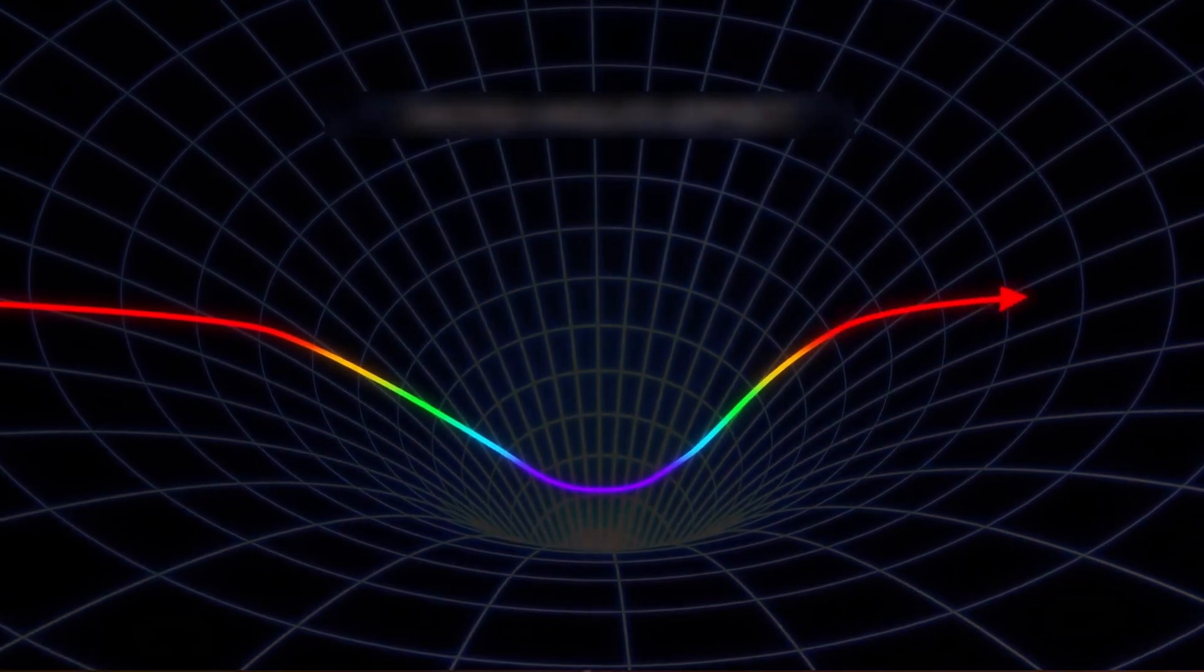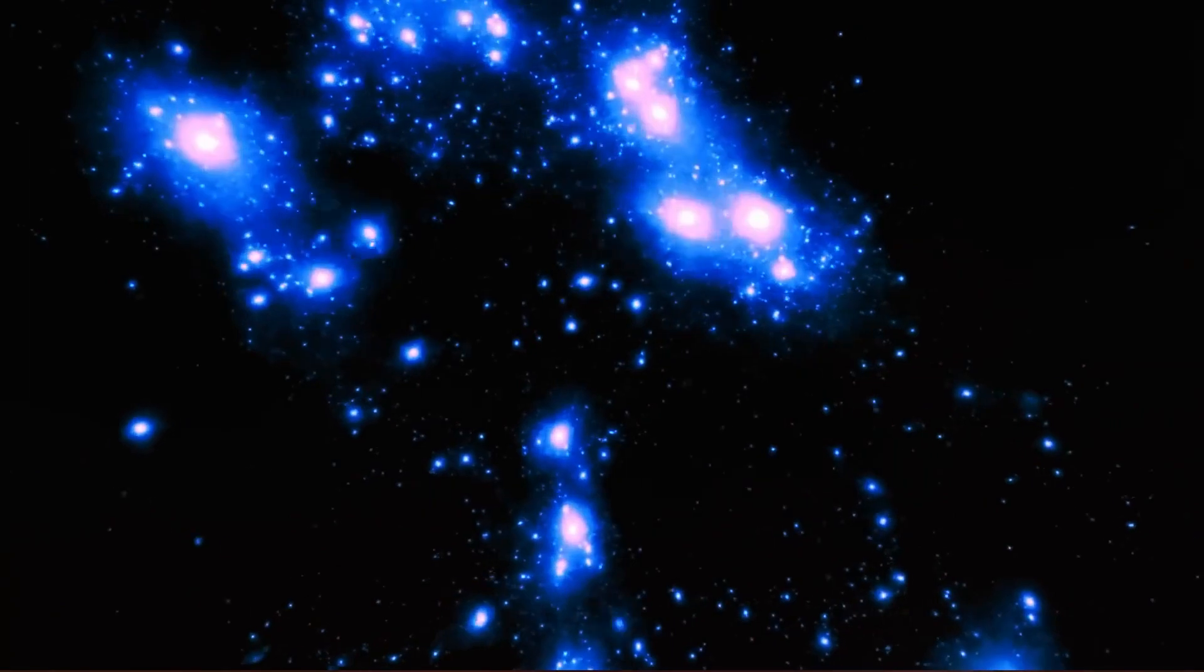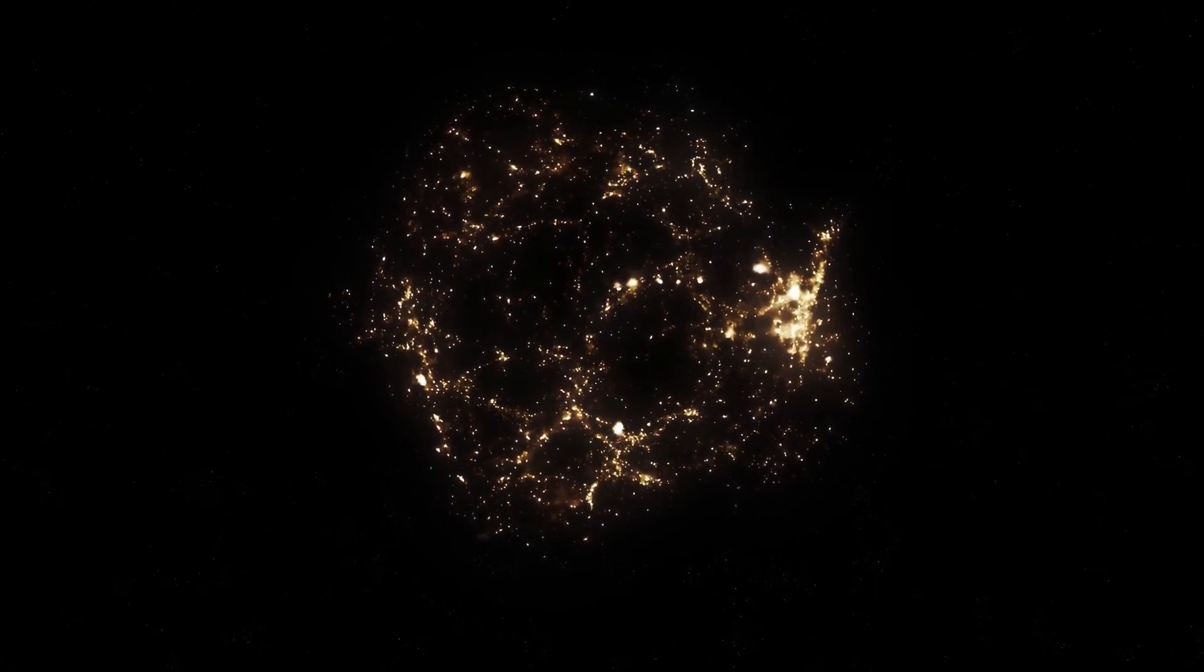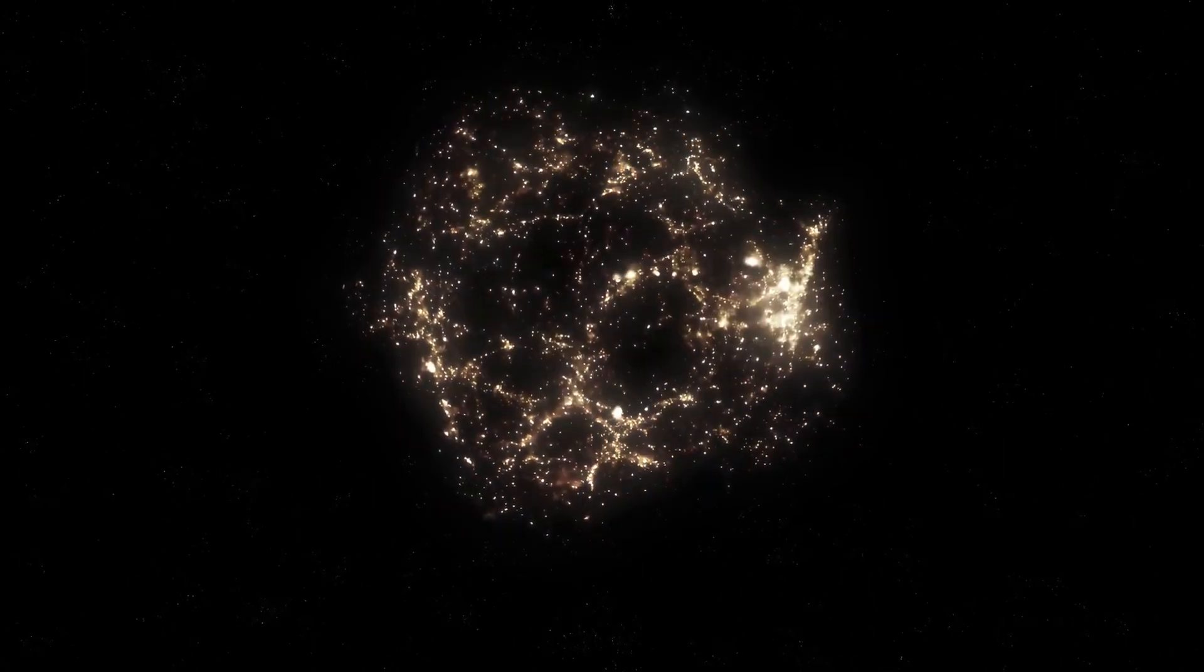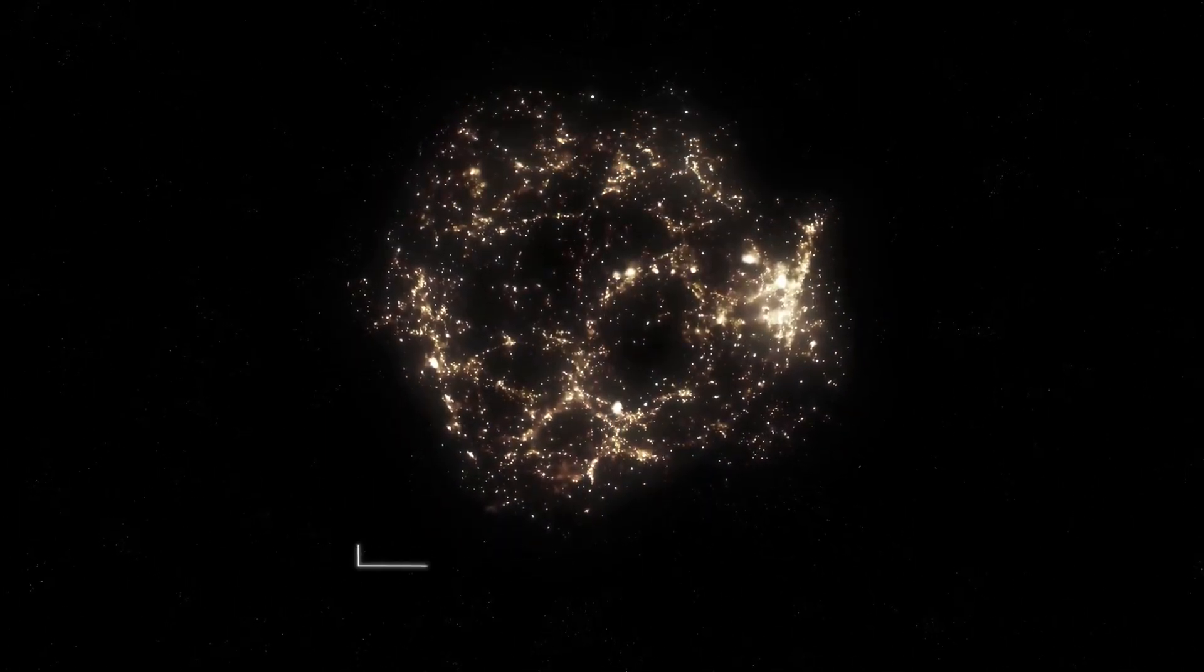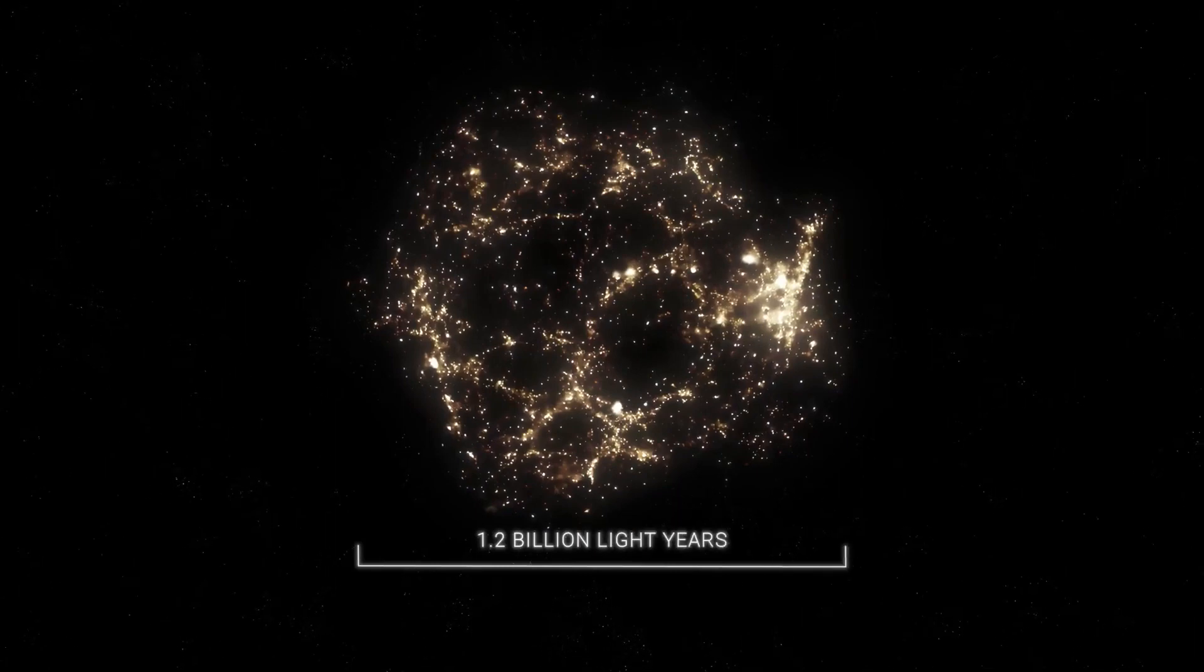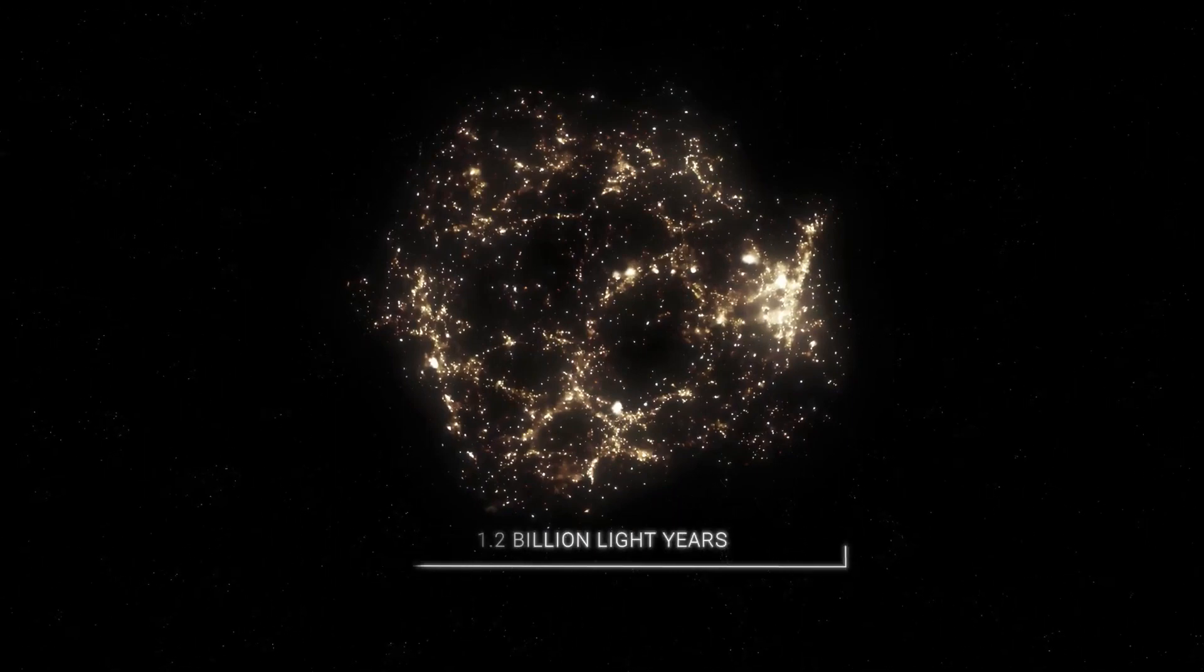Our cosmic odyssey continues as we encounter yet another vast expanse of emptiness, the Canes Venatici Supervoid. Located in the constellation of the Hound Dogs, this supervoid is a testament to the grandeur and scale of our universe. Imagine a void that stretches a jaw-dropping 1.2 billion light-years in diameter, a cosmic desert amidst a lush forest of galaxies.